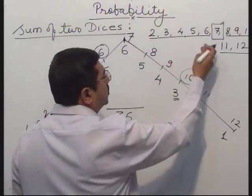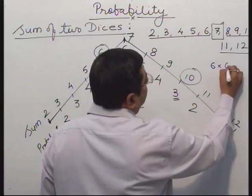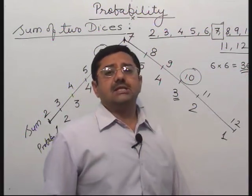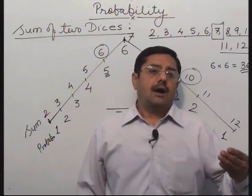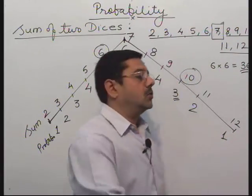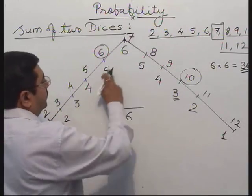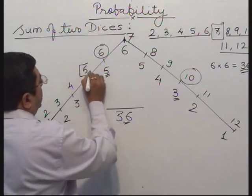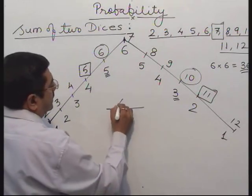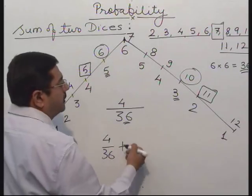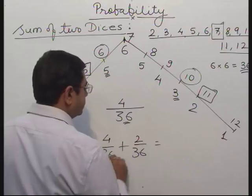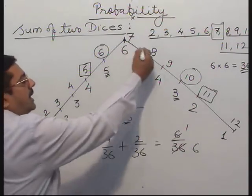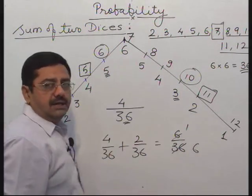Why is the denominator 36? Because with 2 dice, total outcomes will be 6 outcomes from the first die and 6 outcomes from the second die: 6 times 6 equals 36. Total number of cases will be 36. Number of favorable cases divided by total number of cases. What is the probability of getting sum 5 or 11? Simple: 4 by 36 plus 2 by 36, which gives 6 by 36. Simplify. Memorize this triangle — sum of 2 dice, very easy to memorize. Most important.